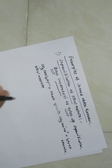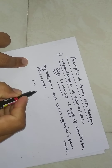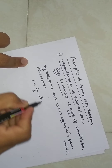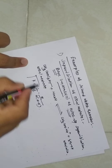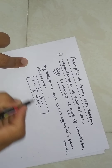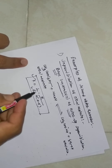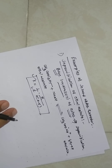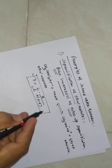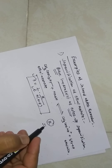Using the second order reaction equation — K equals 1 over T times X over A(A minus X) — you can calculate K by putting in the values of time, initial concentration A, and the decrement values X. If you are getting constant values of K, then we can say that the rate constant is constant.